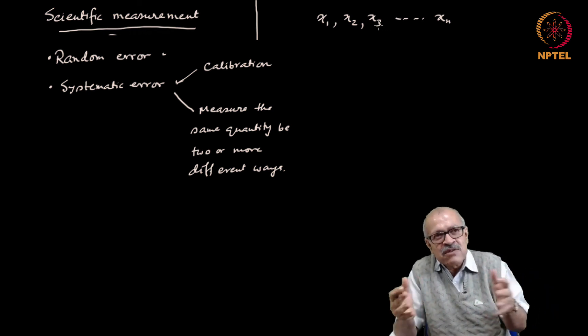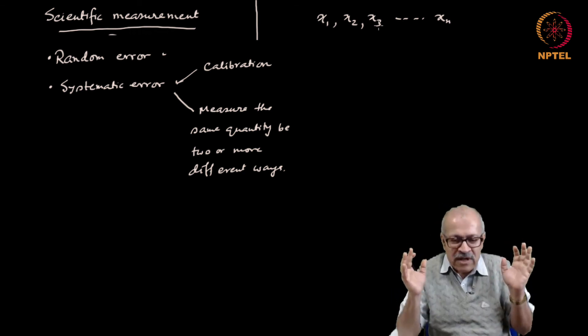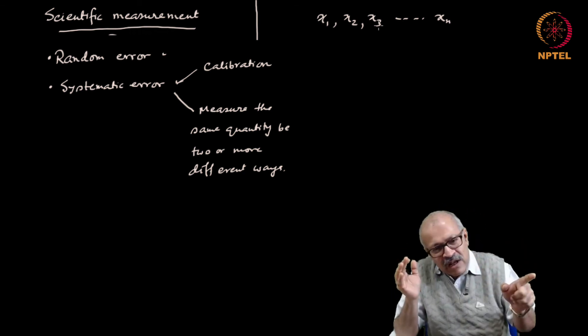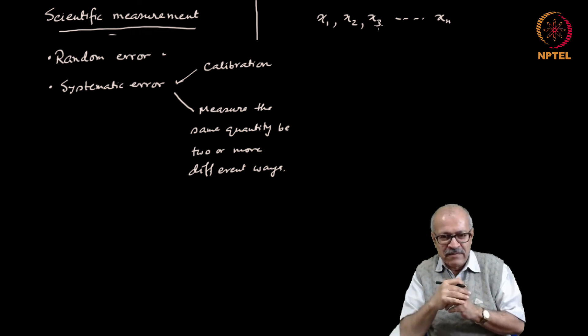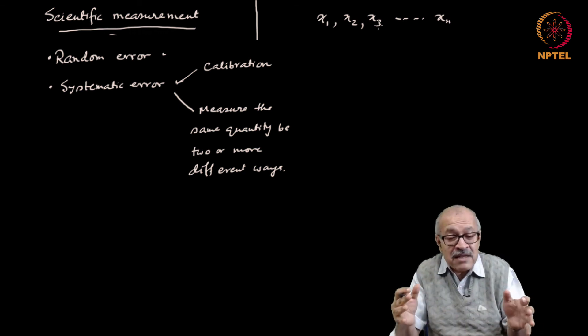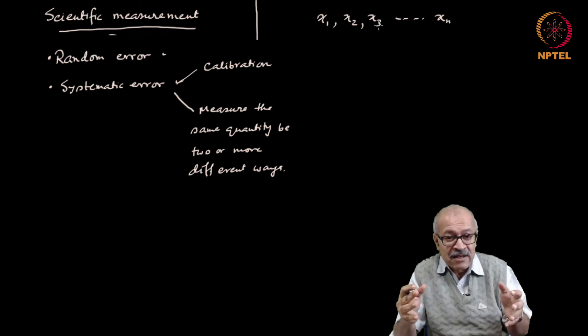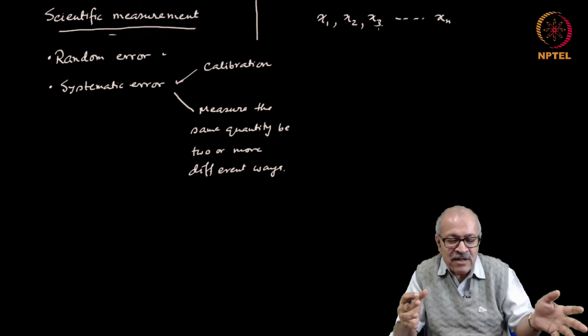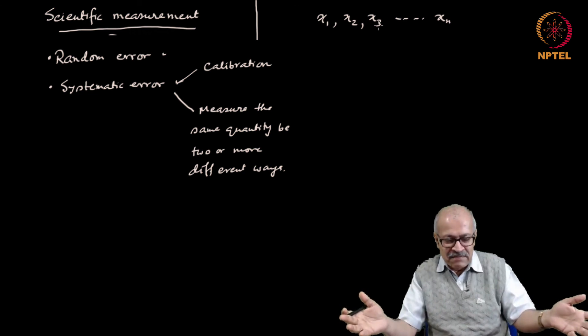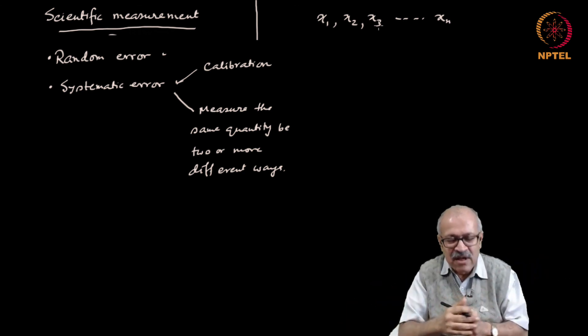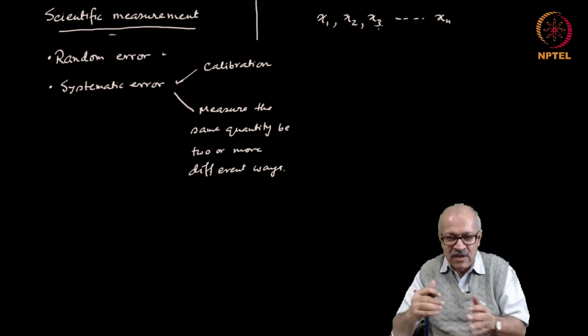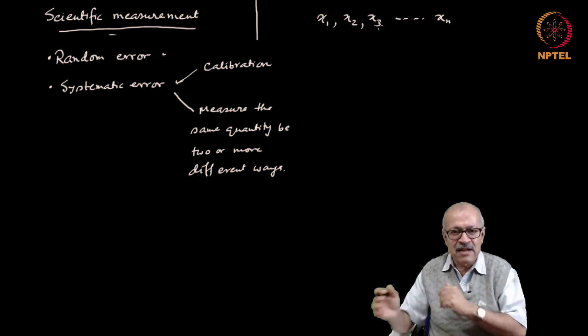And when we state it with the error bar, our statement is of the form that I am fairly confident that the value lies within this range. What do you mean really by saying that I am fairly confident? Can you state a number as a degree of confidence? So all these questions arise, natural questions. We will deal with these questions in the next class.